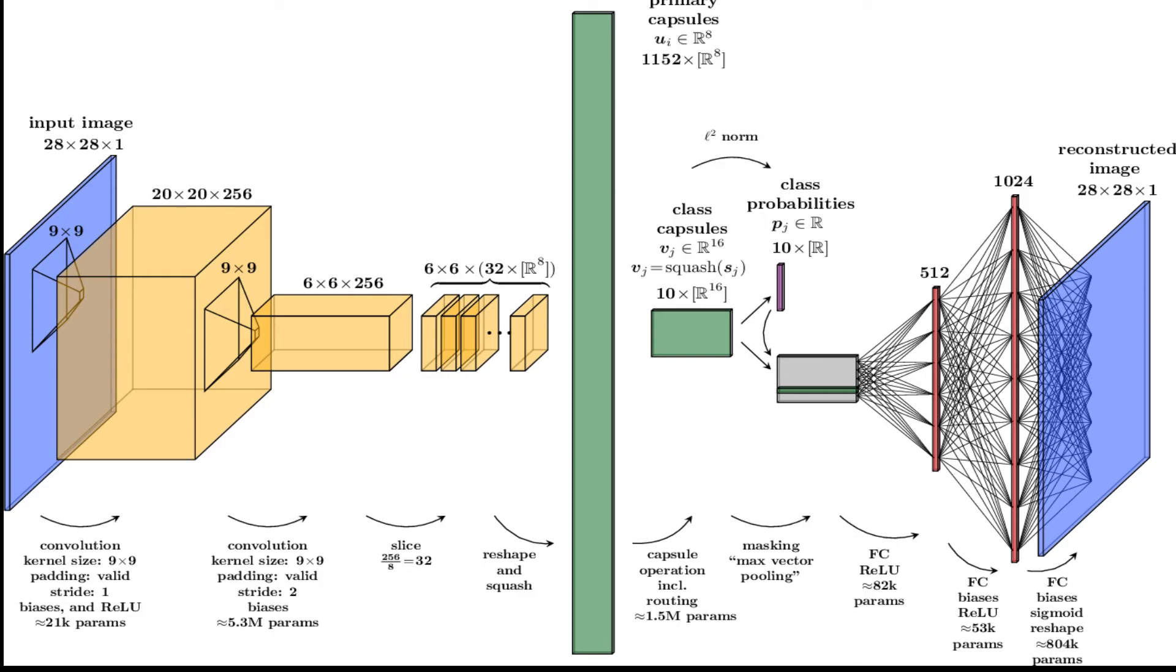Among other benefits, capsule networks address the Picasso problem in image recognition, images that have all the right parts but that are not in the correct spatial relationship.